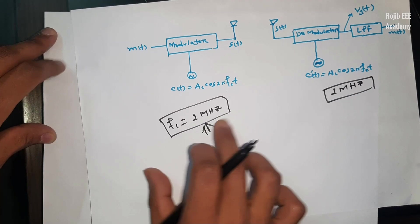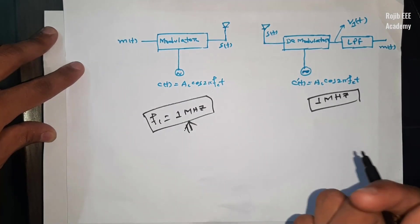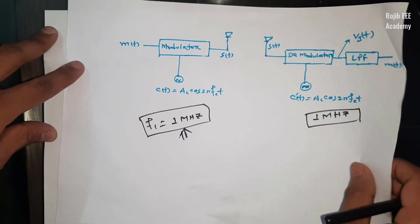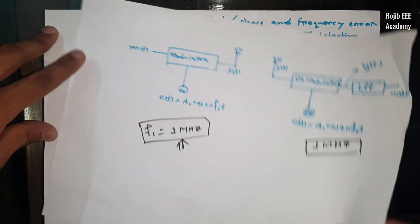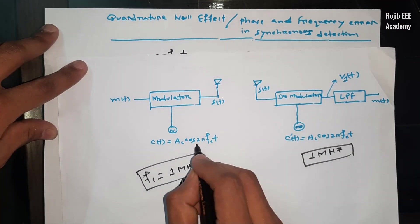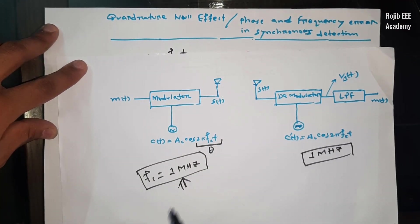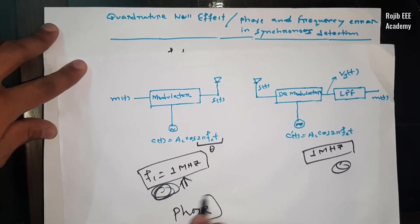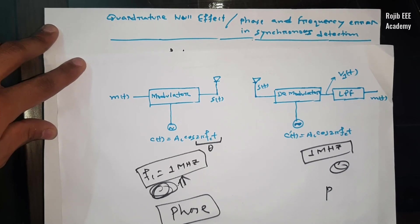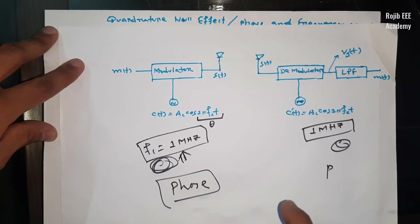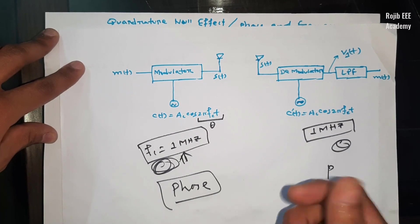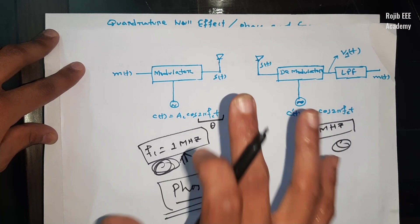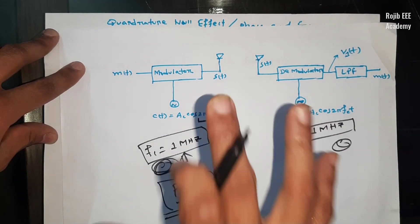I am here talking about 1 MHz. So we need 1 MHz. But we have fc with theta, so theta is also a factor of frequency and phase. The frequency is not the same, but the same thing is the phase. The phase is not the same — it's very difficult. The basic demodulator has a vicious disadvantage in this case.